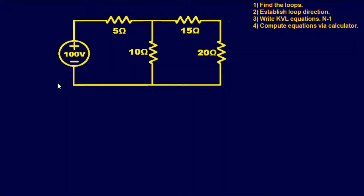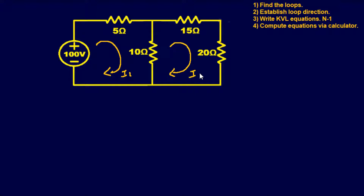For our first example, we're going to find the currents flowing through the resistors in the circuit. We'll do steps one and two together. We find our loops and establish a direction. Current flow I1 is the first loop, I2 is the second loop, and I3 goes around the outside of the circuit — that's the third loop. This gives us a maximum of three loops.